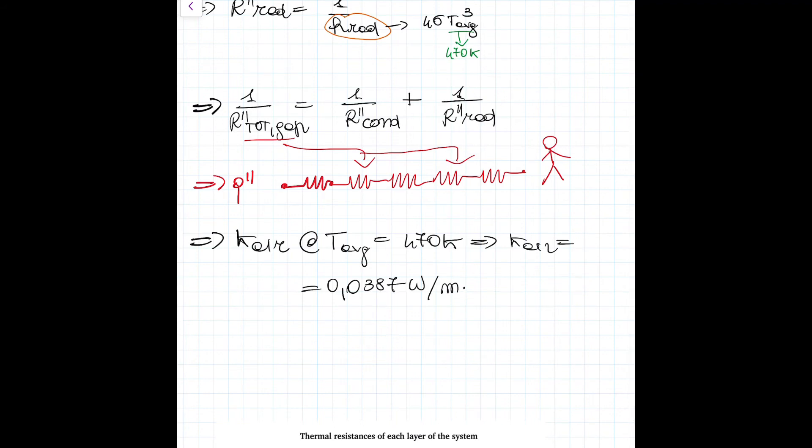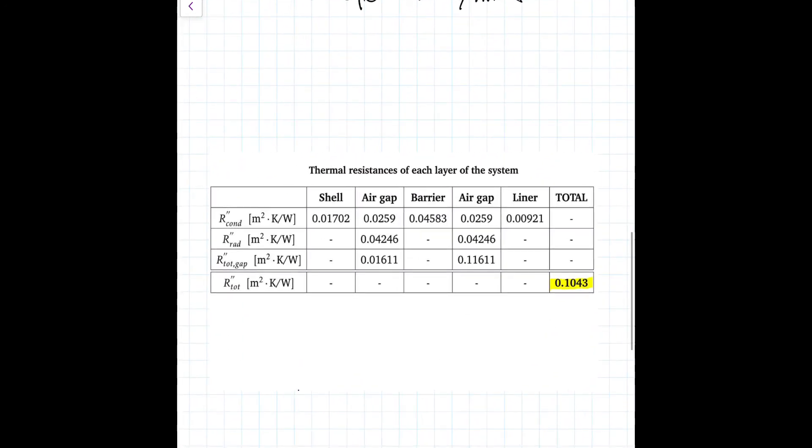Having said that, we now have all the data we need to actually build this table that I'm showing you right now. This table contains all the results that you should get if you have followed the right steps and procedure. And of course, this one that I highlighted is actually the total resistance of the system.